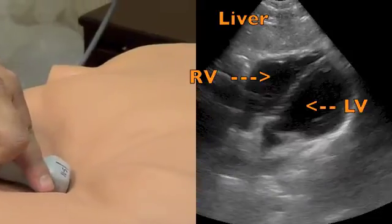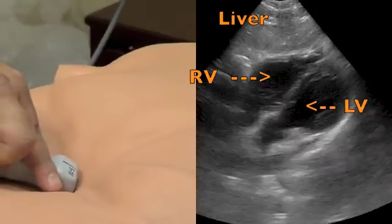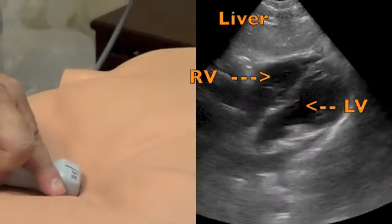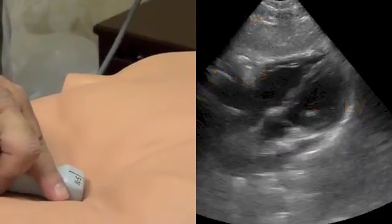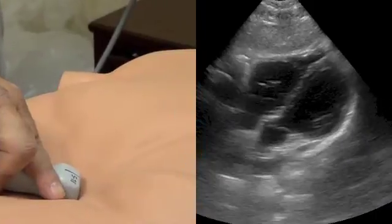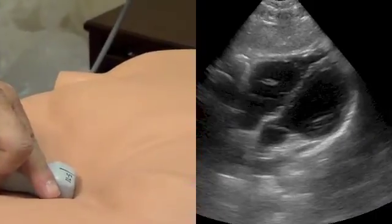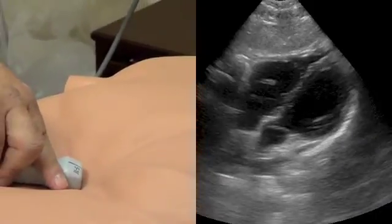When you're assessing the subcostal view, you always assess for cardiac motion and any pericardial effusion. And in this case, you're looking for right heart strain.